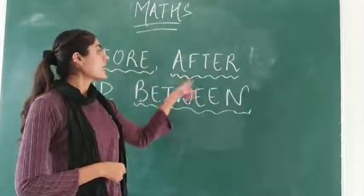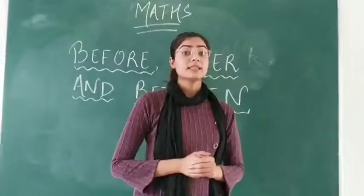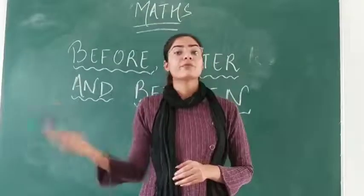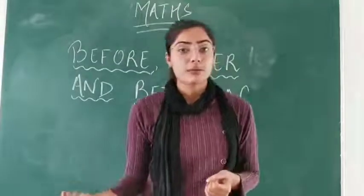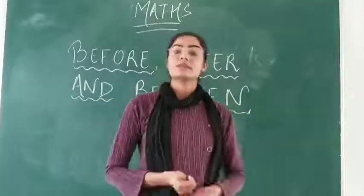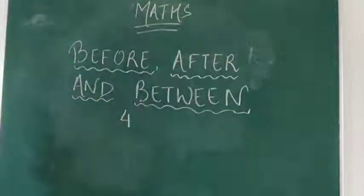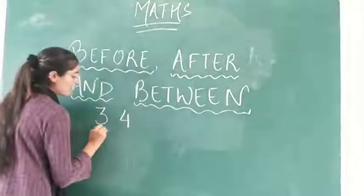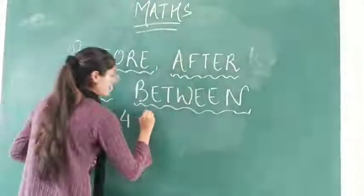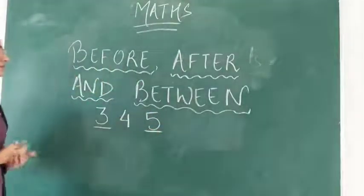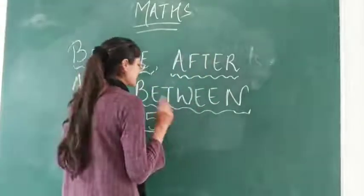So now we are going to see before, after, and between. How many of you remember what is the meaning of before and after? The meaning of before was 'pehle' and the meaning of after was 'baad mein.' The number that comes before is called before, and the number that comes after is called after. For example, what comes before four? Three comes before four, and five comes after four.